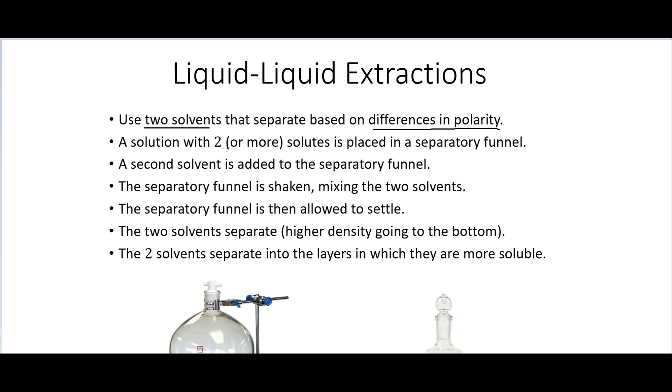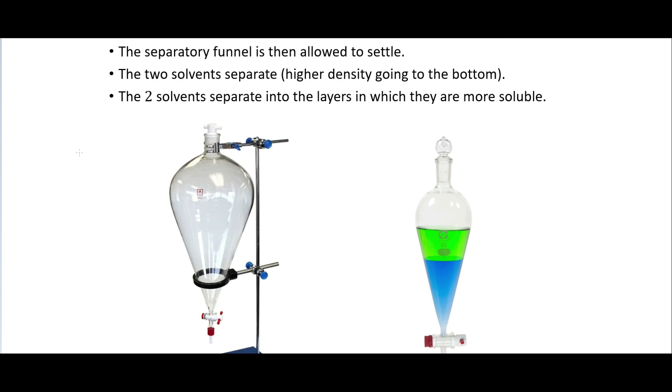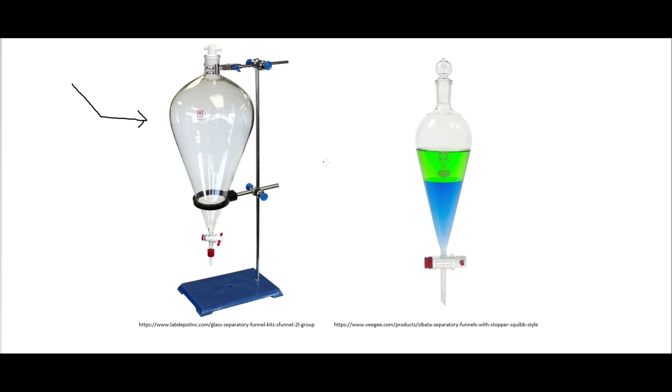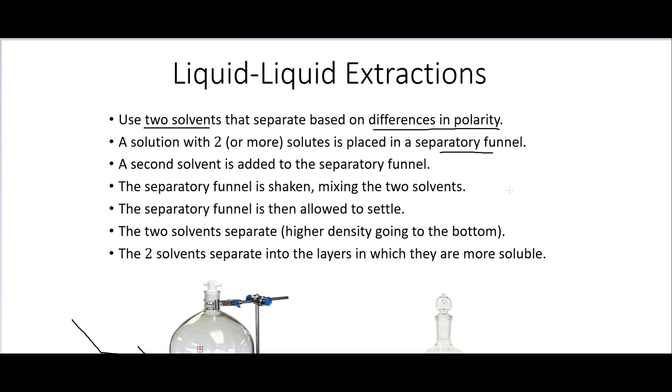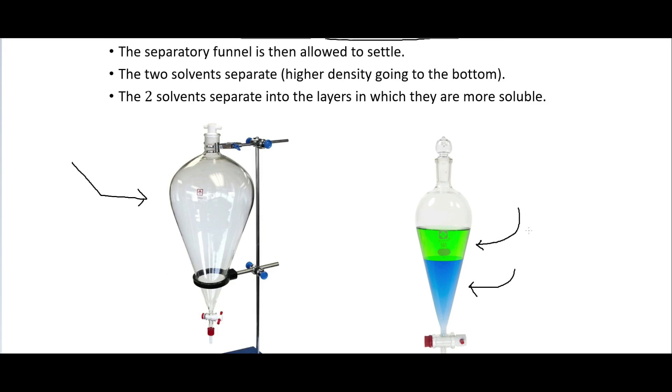So a solution with two or more solutes is placed into a separatory funnel and those look like this right here. So it has kind of this round conical shape and we can have two different solvents in here that separate into two different phases. So a second solvent is added to the separatory funnel. The separatory funnel is shaken which mixes the two solvents and then the separatory funnel is allowed to settle.